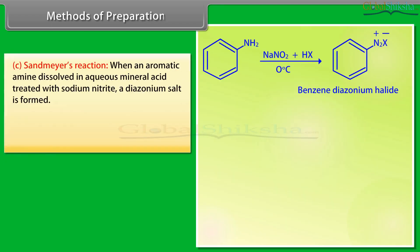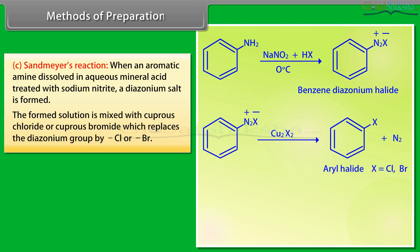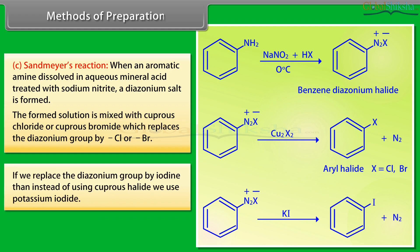Sandmeyer's Reaction: When an aromatic amine dissolves in aqueous mineral acid treated with sodium nitrate, a diazonium salt is formed. The formed solution is mixed with cuprous chloride or cuprous bromide which replaces the diazonium group by Cl or Br. If we replace the diazonium group by iodine, then instead of using cuprous halide, we use potassium iodide.